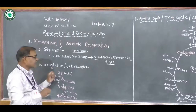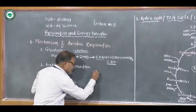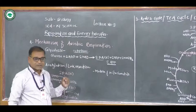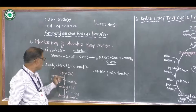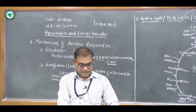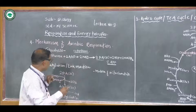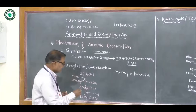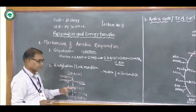The second step is called acetylation or link reaction, which takes place in the matrix of mitochondria. The matrix of mitochondria contains different enzymes and coenzymes. In this step, pyruvic acid is further broken down to form acetyl by oxidative decarboxylation. First, decarboxylation takes place — meaning carbon dioxide is removed.